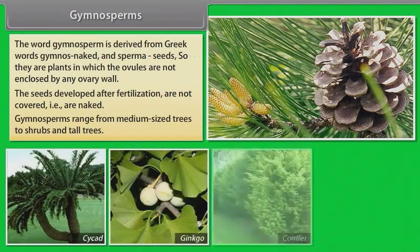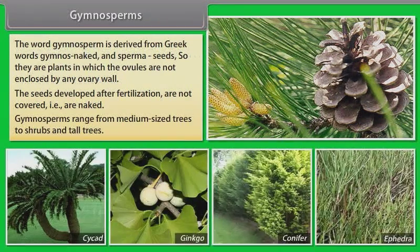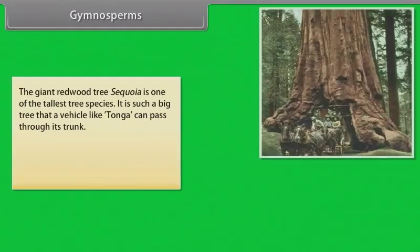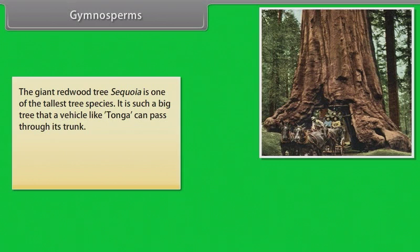Gymnosperms range from medium-sized trees to shrubs and tall trees. The giant redwood tree Sequoia is one of the tallest tree species. It is such a big tree that a vehicle like Tonga can pass through its trunk.